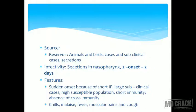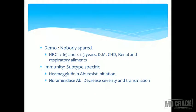Symptoms include chills, malaise, fever, muscular pain, and cough — nothing special, common to many viral conditions. Regarding demography, nobody is spared, but high-risk groups include those above 65 years of age, children below 1.5 years, and patients with diabetes mellitus, coronary heart disease, renal disease, and respiratory disease. Immunity is subtype-specific.